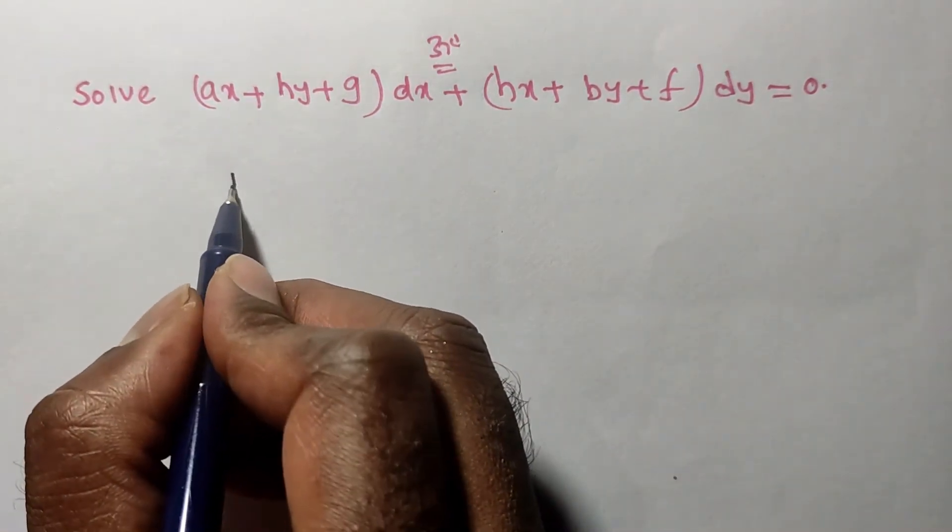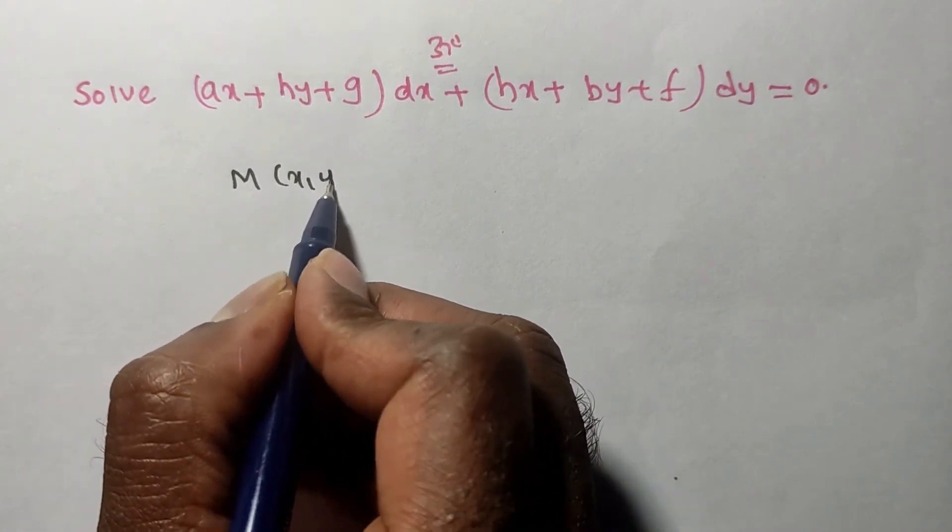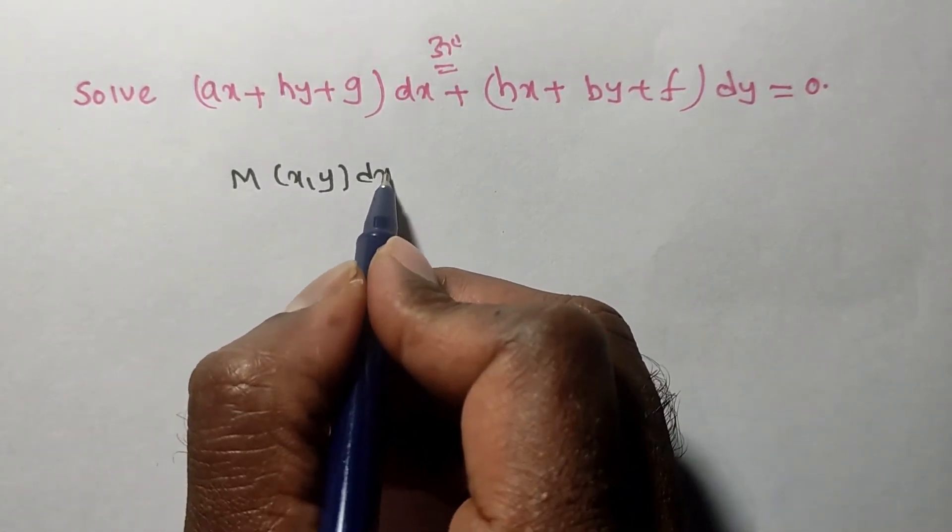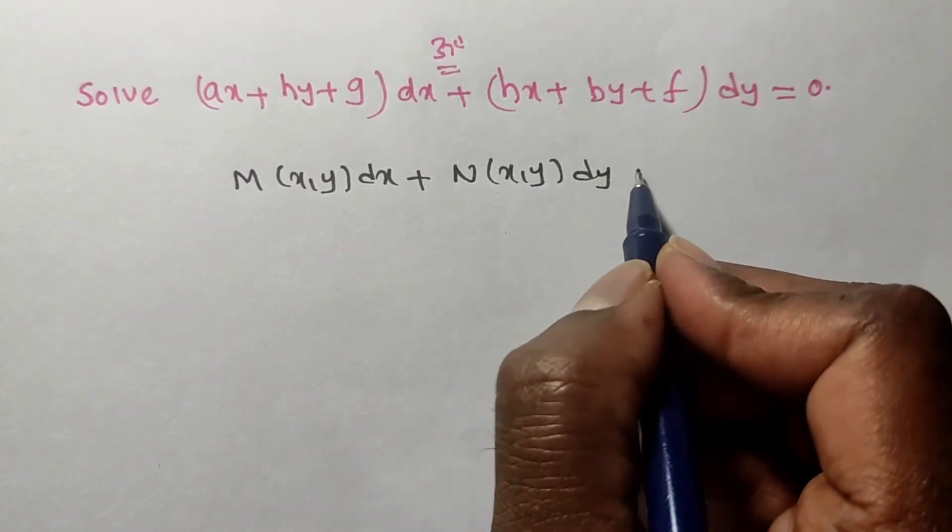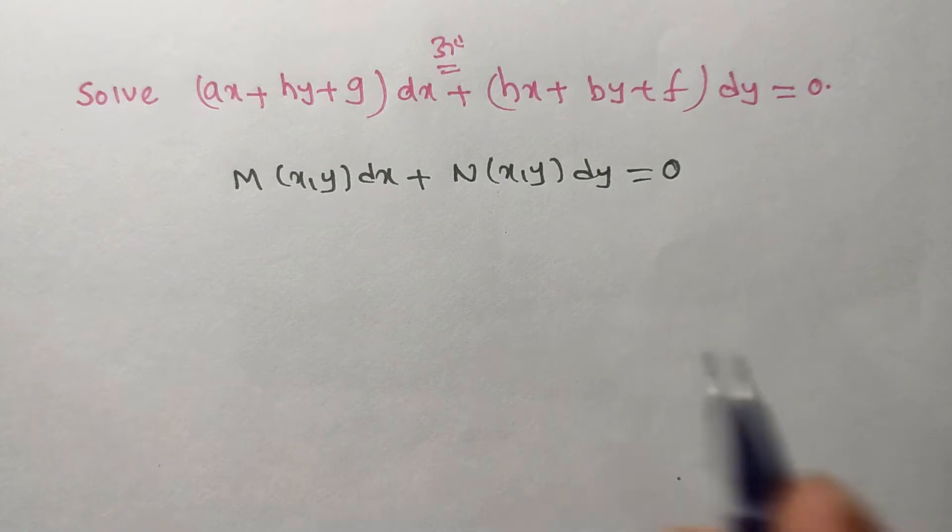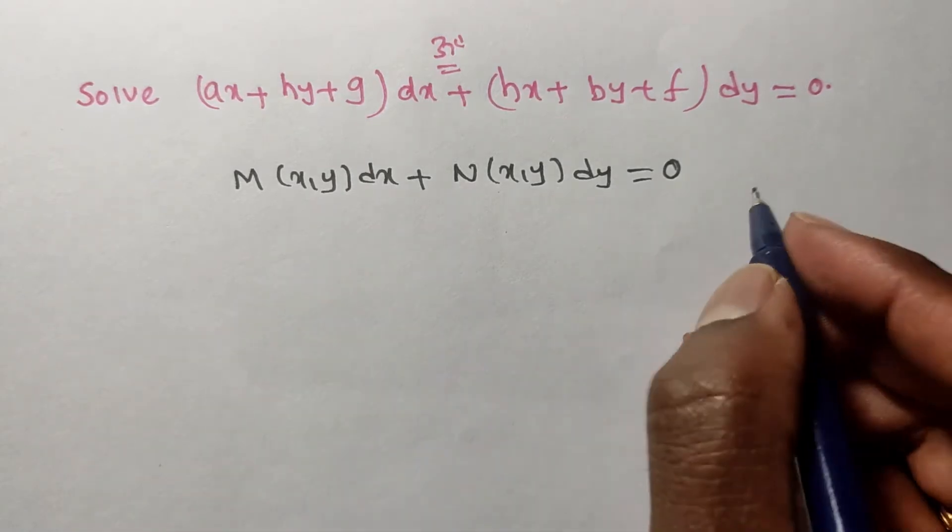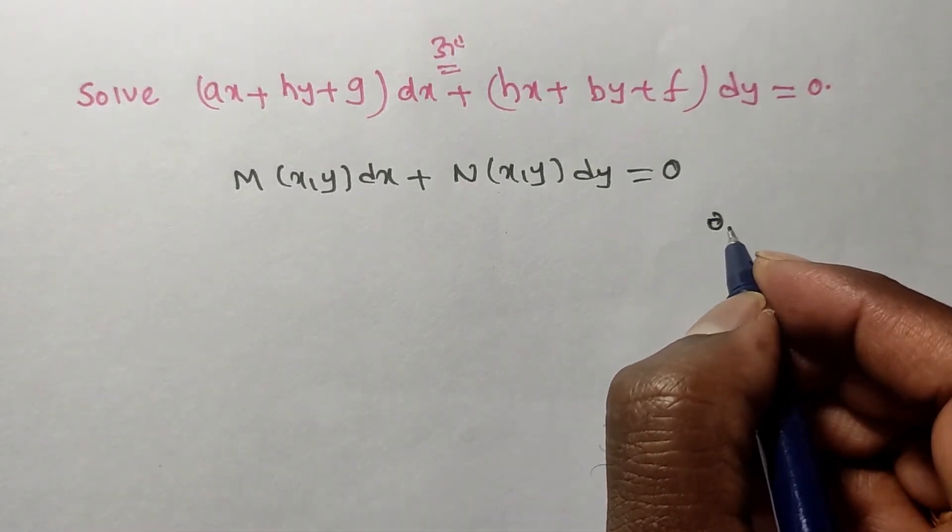By observation we can say the given problem is in the form M(x,y)dx + N(x,y)dy = 0. If the given differential equation is in this form, we have to verify whether it is exact or non-exact.